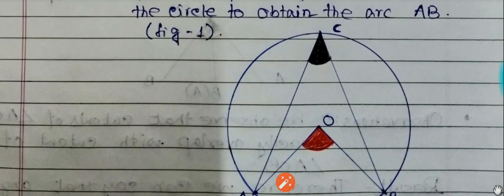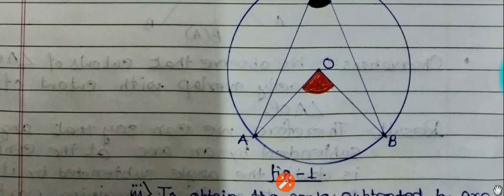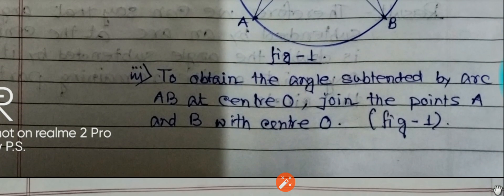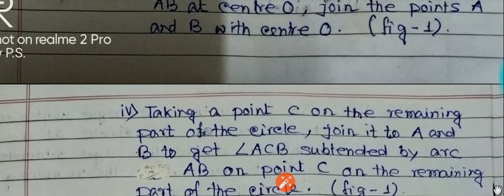After that, consider one more point C on the remaining part of the circle and join this point with A and B to form an angle ACB like this. And mark these two angles as angle AOB and angle ACB.